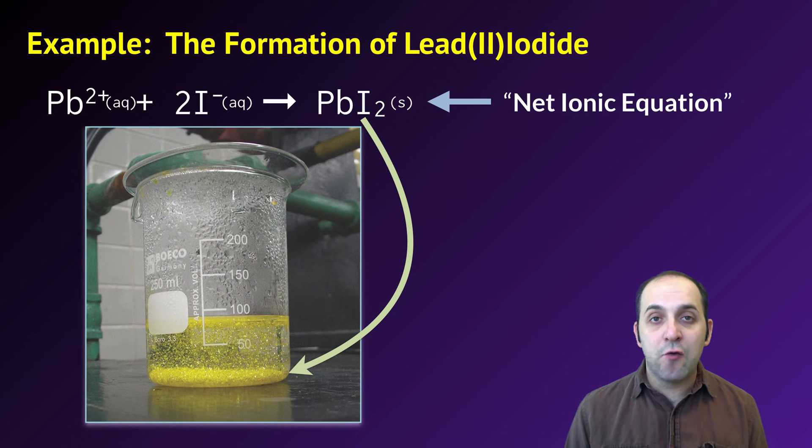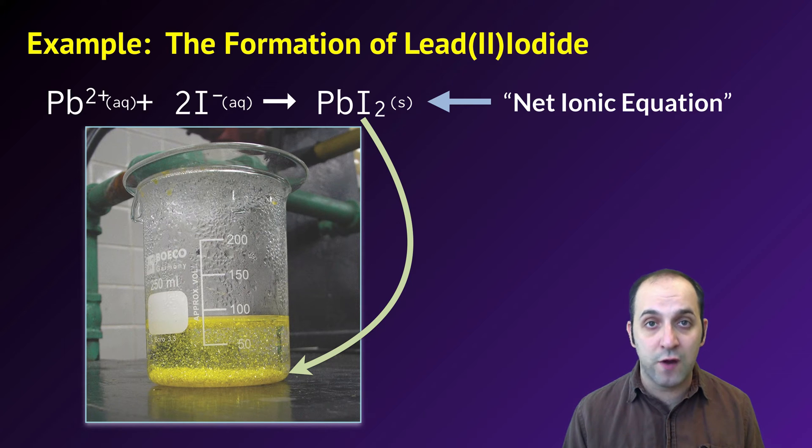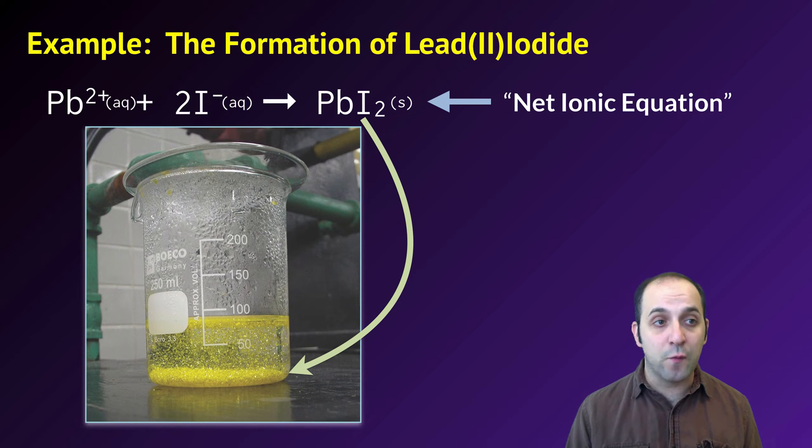It's important to understand that what we've done here is we've just focused on the ions that participate in the reaction. So we've left the spectator ions out of the overall equation. This is what's called the net ionic equation, and it's a totally valid way to write a double replacement reaction if you don't want to show the ions that are not participating in the reaction. We just omit them and only write the ions that are going to form the precipitate.